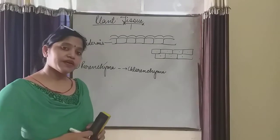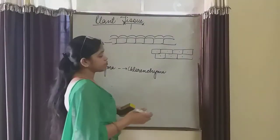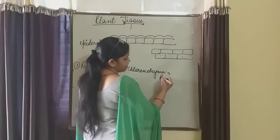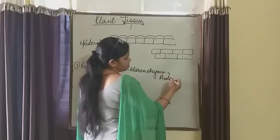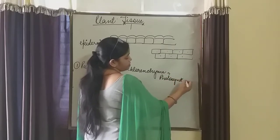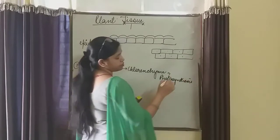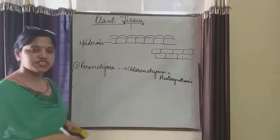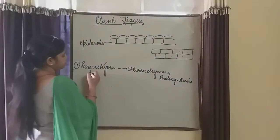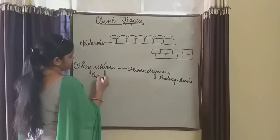If chloroplast is there then it becomes chlorenchyma, and chlorenchyma will do photosynthesis. And from the food, they will make food and store it, therefore the parenchyma is known as the storage tissue.